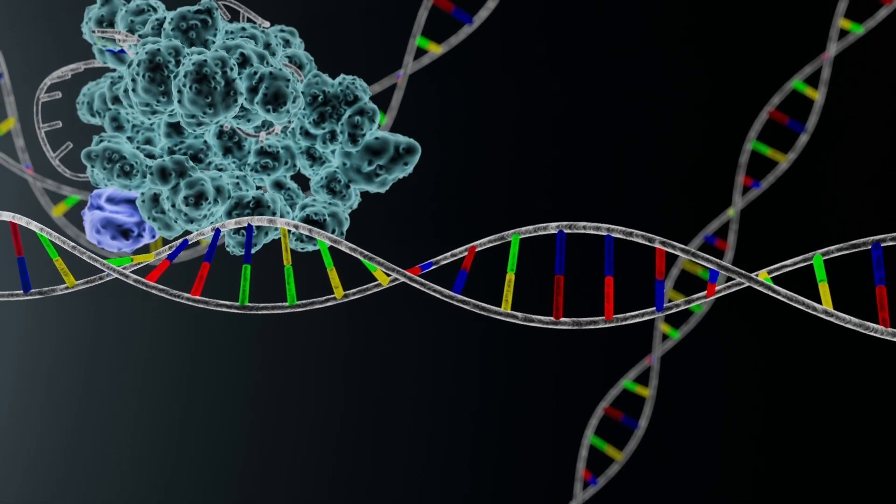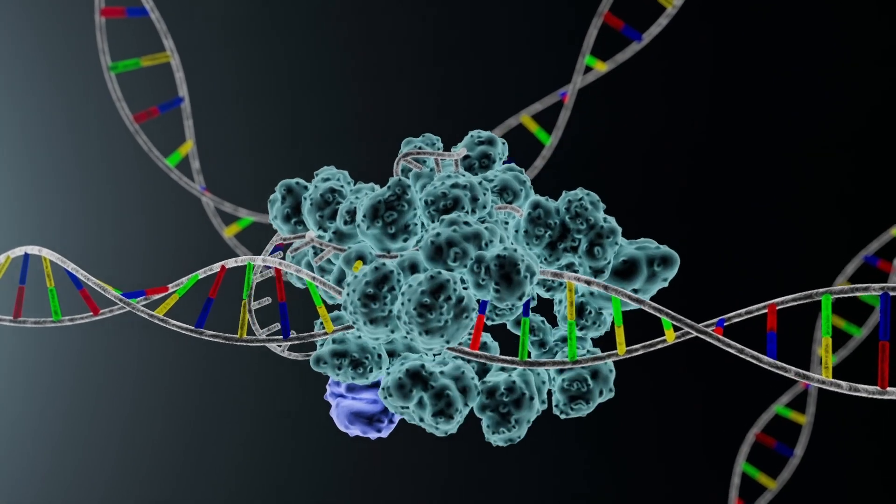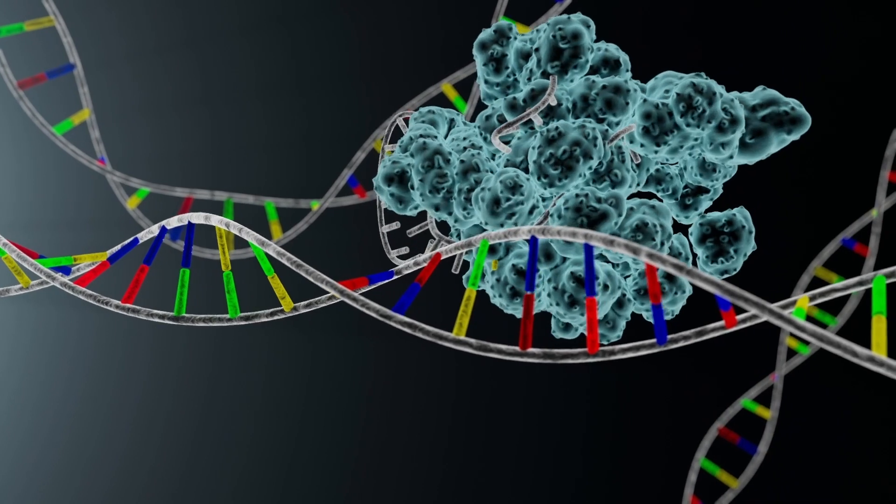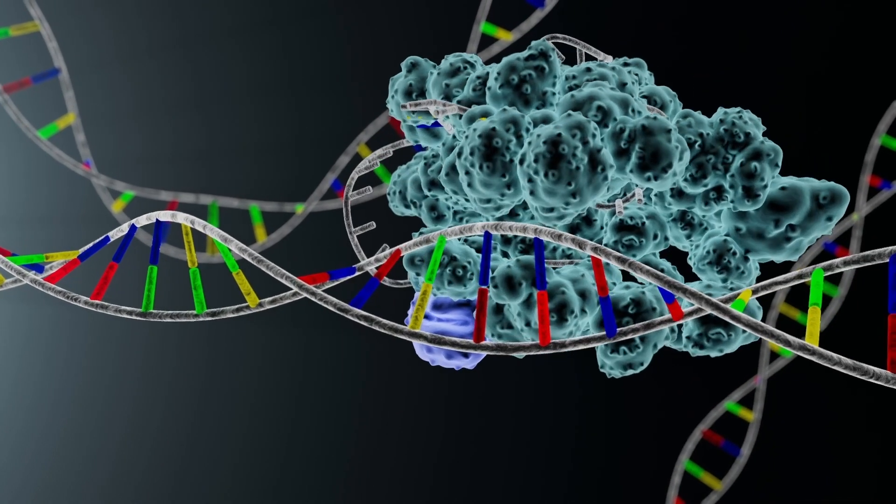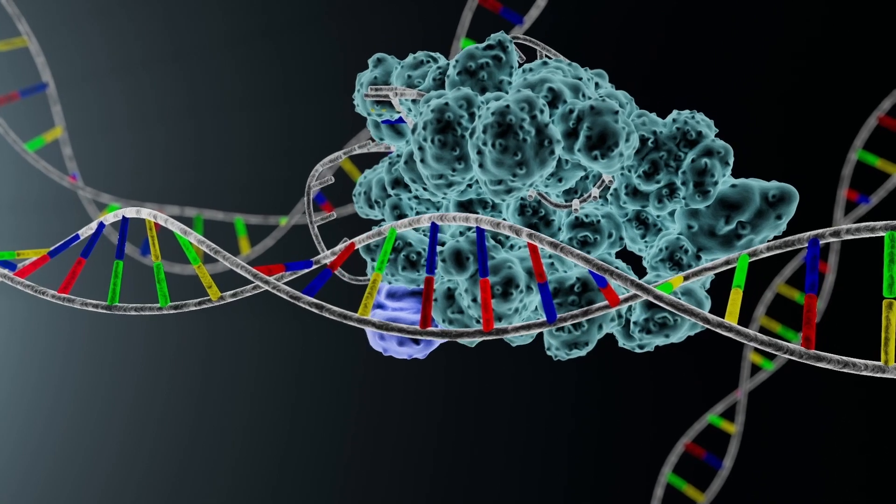Base editing is a technology created to target these single point mutations. It's like spellcheck for genes. It creates precise changes in the genetic code, one letter at a time. These small changes can silence a disease-causing gene or help activate a specific gene.